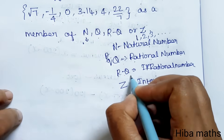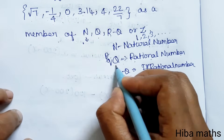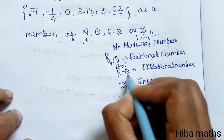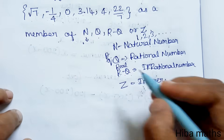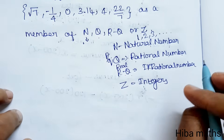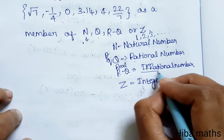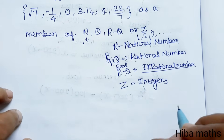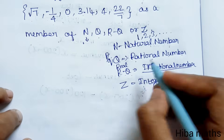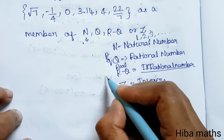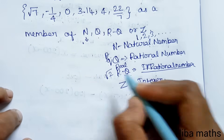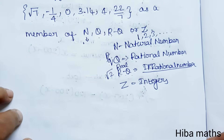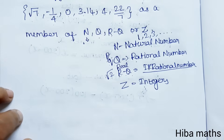R minus Q represents irrational numbers. R is a real number. Real numbers include rational numbers, and if we remove the rational part, we get irrational numbers. Irrational numbers cannot be expressed in P by Q format — for example, root 2. They are also non-terminating decimal numbers.